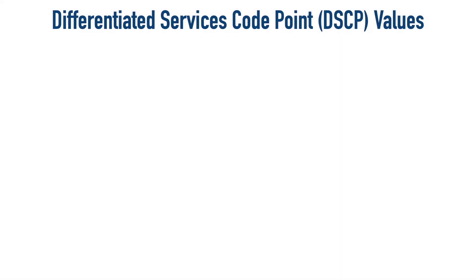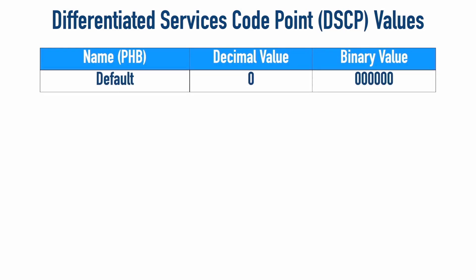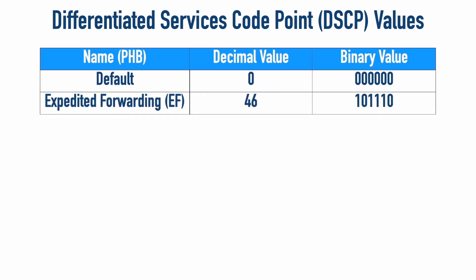One PHB is simply named default. We can mark traffic with a default value if we don't have a particularly strong opinion about it — we don't want to punish it or reward it, it's just default traffic. That has a decimal value of zero, and all six leftmost bits of the TOS byte are zeros. At the other end of the spectrum, we have expedited forwarding, or EF, with a decimal value of 46. In binary, looking at those six leftmost bits of the TOS byte, 46 would be 101110.